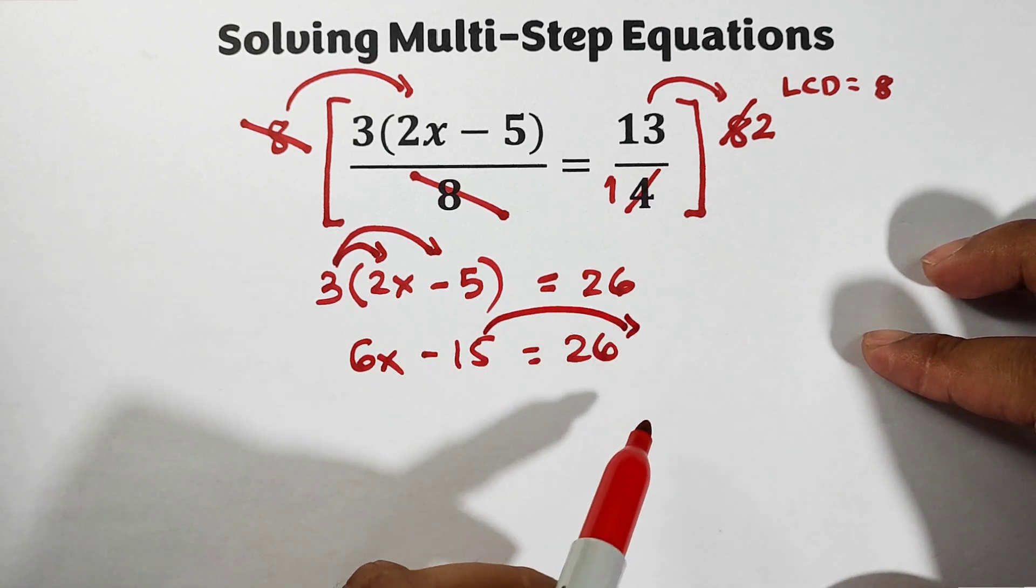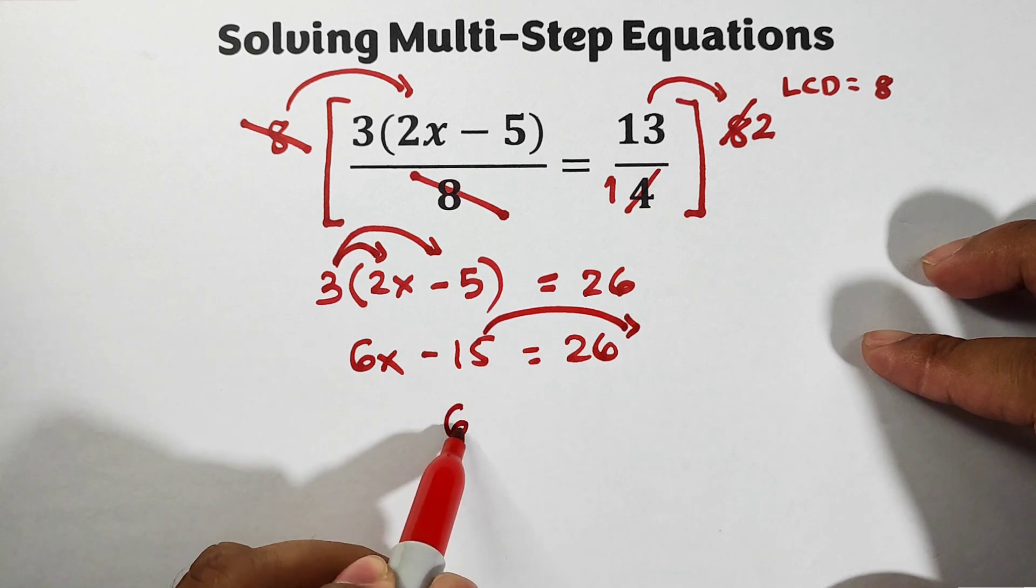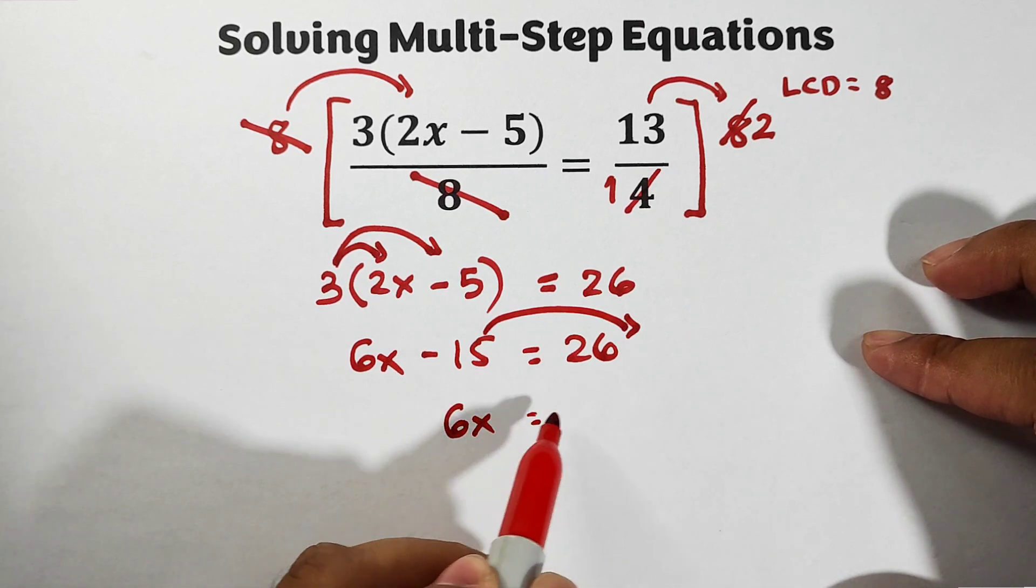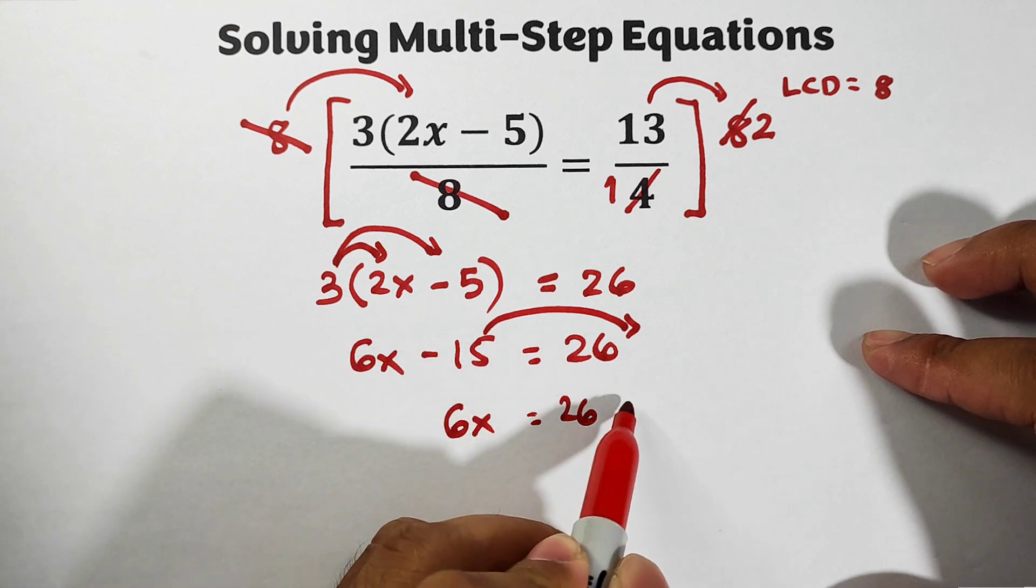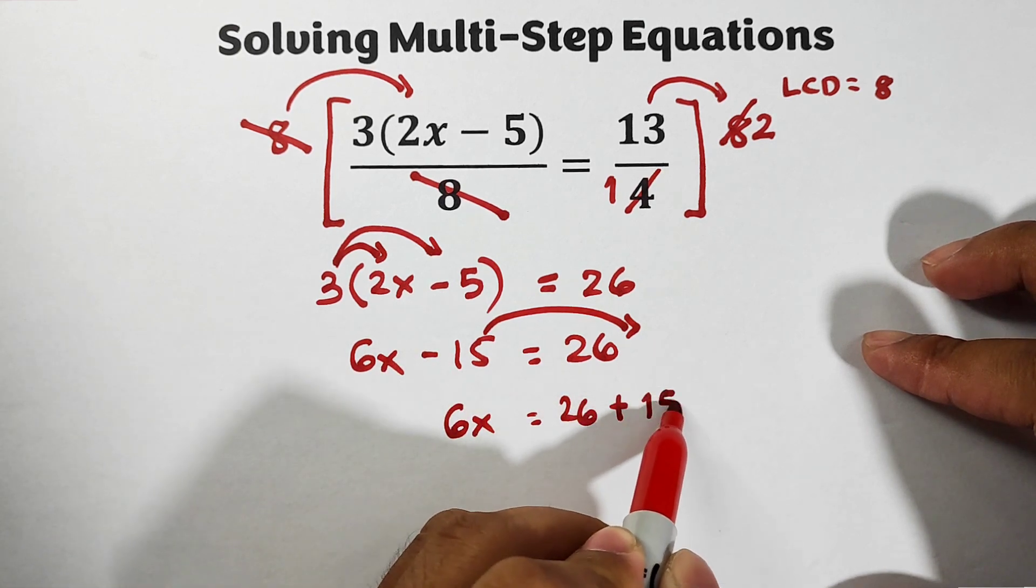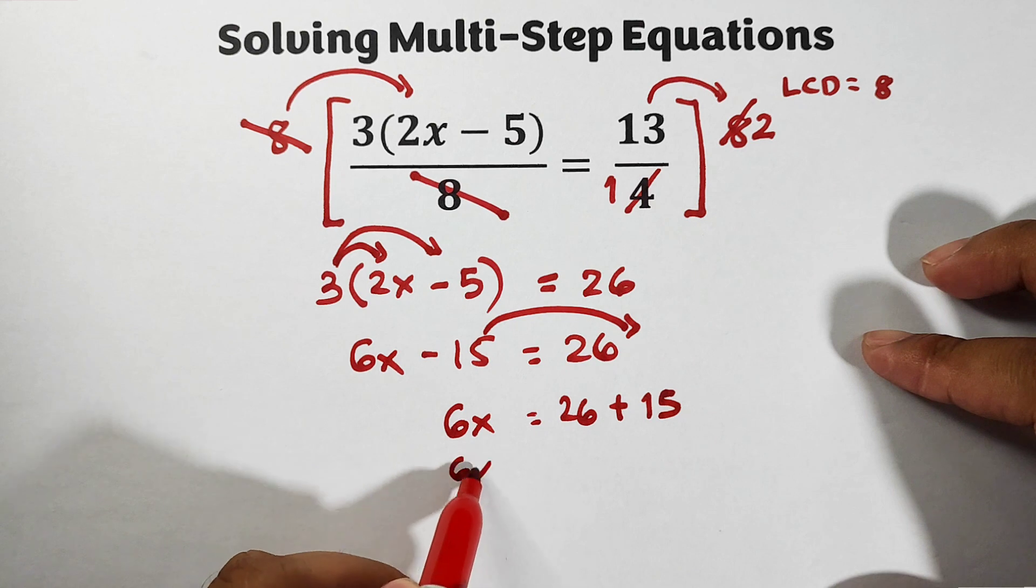What's next is we will transpose negative 15 to the other side. It will become 6x is equal to 26, from negative 15 it will become plus 15. So this is 6x is equal to...